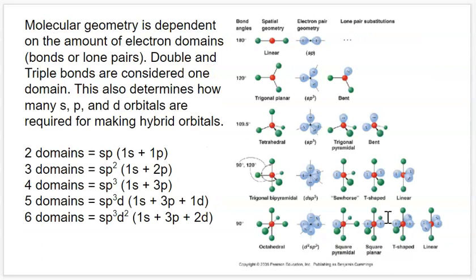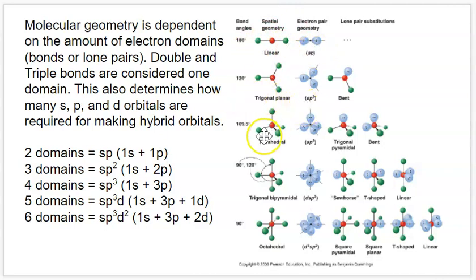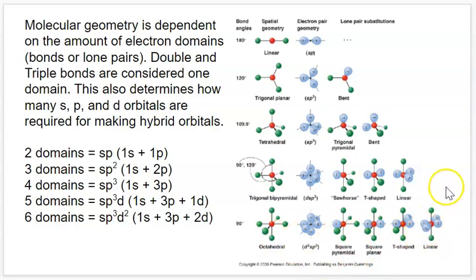As a summary of all these geometries and their hybridizations: two-domain things are always SP; three-domain things are always SP2; four-domain things are always SP3; five-domain things are always SP3d; and six-domain things are always SP3d2. All geometries with the same number of electron domains share the same hybridization.